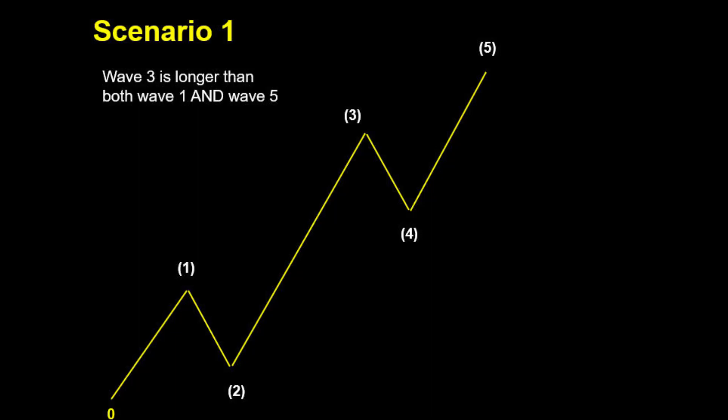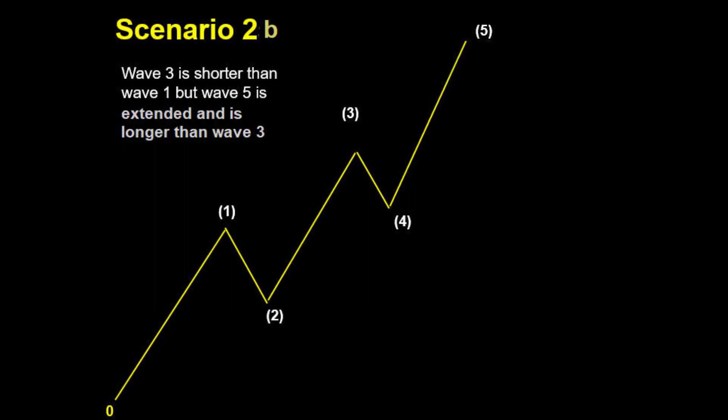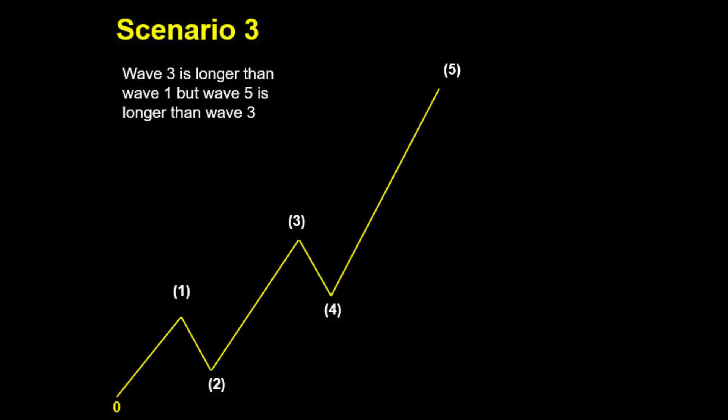Let us consider three scenarios. The first scenario is wave 3 being the longest of the three impulse waves — that is usually what happens and is perfectly fine. Scenario two: wave 3 can be smaller than wave 1, but in this case wave 5 will be smaller still than wave 3. This is fine, but if you observe wave 5 becoming longer than wave 3, something is wrong with the count — we are probably still in wave 3. The third scenario is where we start with a small wave 1, get a wave 3 longer than wave 1, and then wave 5 becomes extended and bigger than both wave 1 and 3.